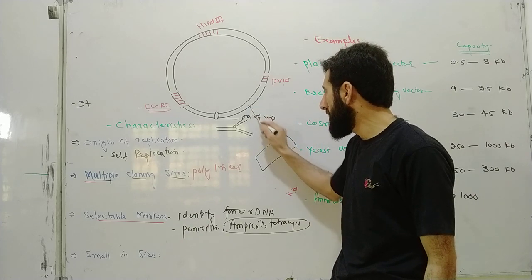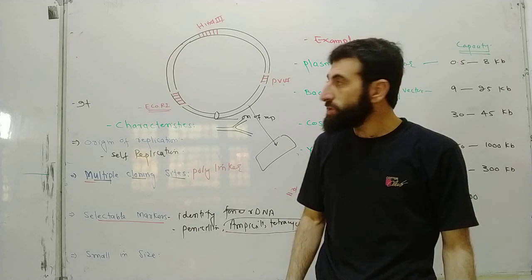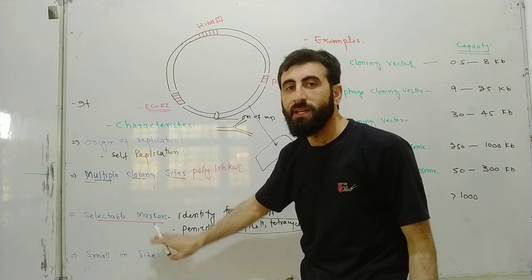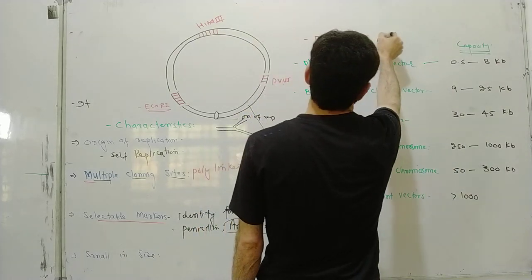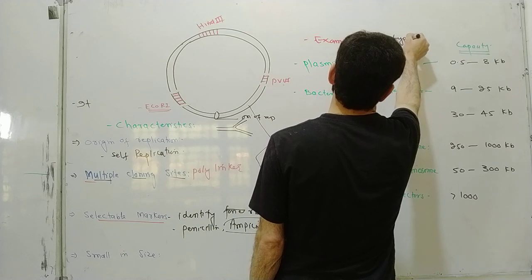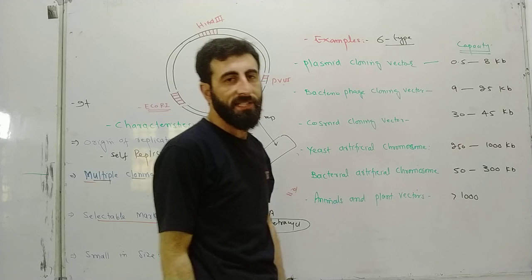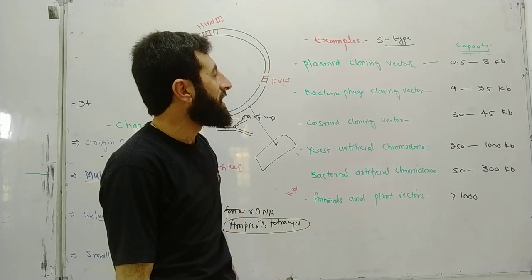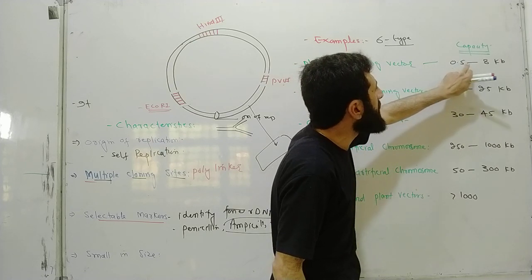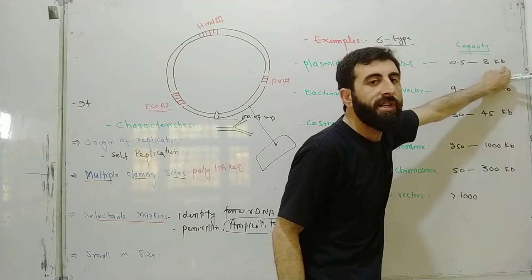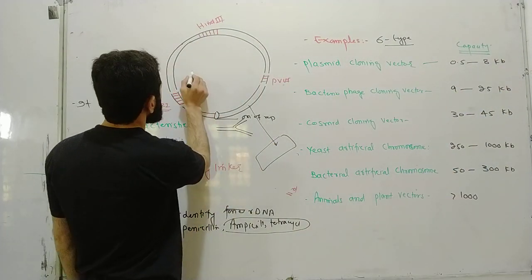Another property is the expression system. The size of the vector should be small. There are different types of molecular vectors: plasmid cloning vectors can carry approximately 0.5 to 8 kilobases of foreign DNA.